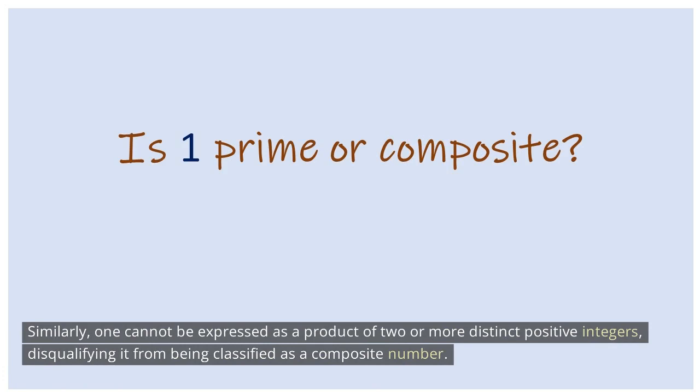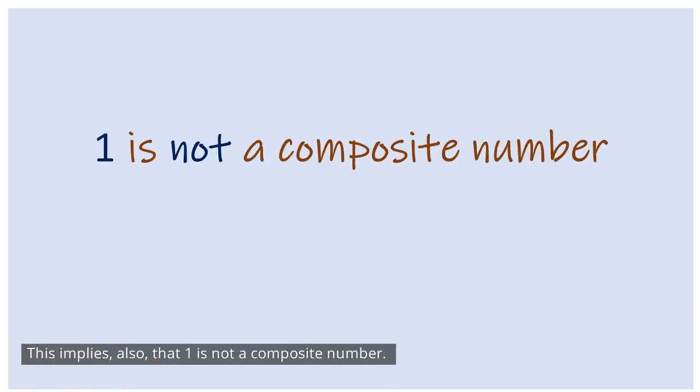Similarly, 1 cannot be expressed as a product of two or more distinct positive integers, disqualifying it from being classified as a composite number. This also implies that 1 is not a composite number.